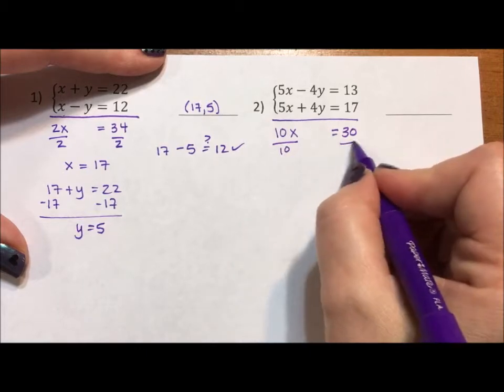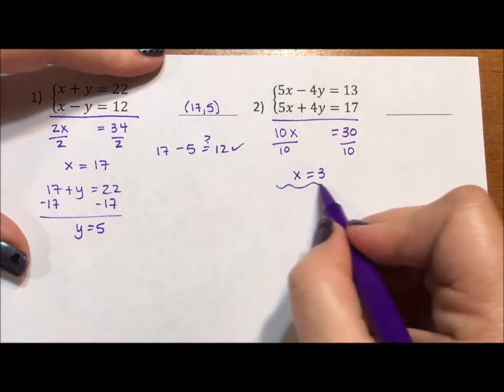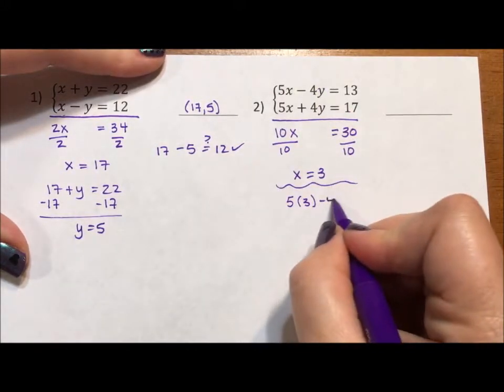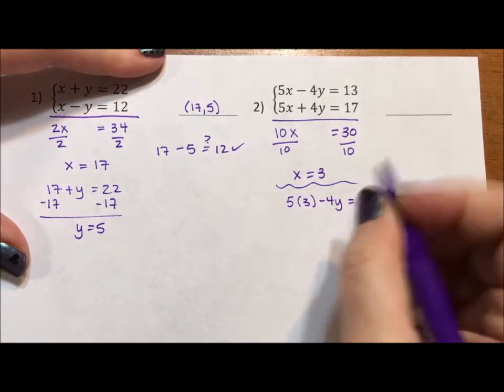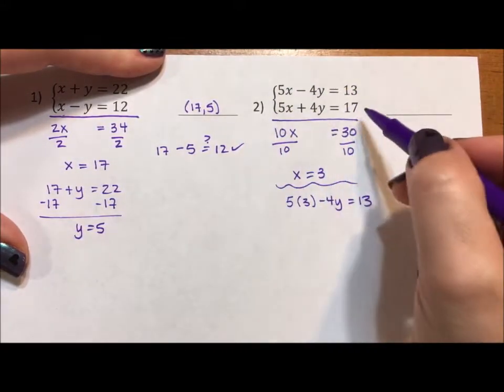If I divide by 10, I get x is equal to 3. So this is going to be a little bit harder. 5 times 3 minus 4y equals 13. I just put this 3 into the first equation. I'm putting it into the first, I'm checking with the second. I pretty much will do that in all my videos so that if you want to pause and try it yourself, you can predict the way I'm going to solve this.